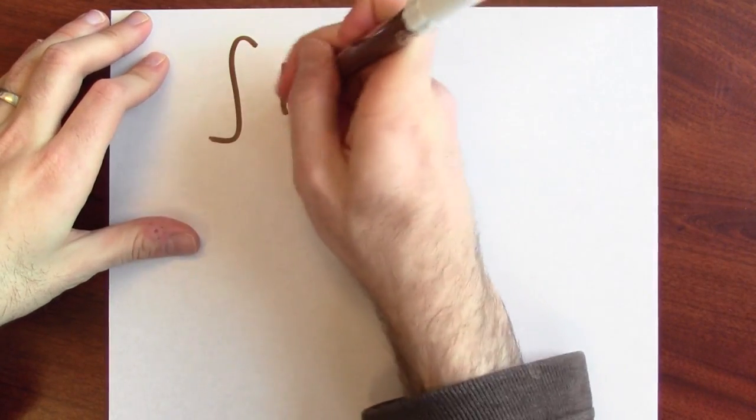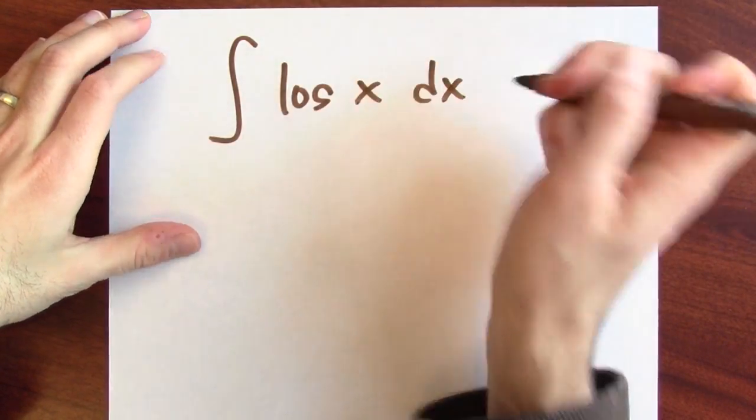We could figure out an antiderivative for log x by just guessing and then checking our answer, but we can also get that antiderivative by using integration by parts. I want to know an antiderivative of log x dx.